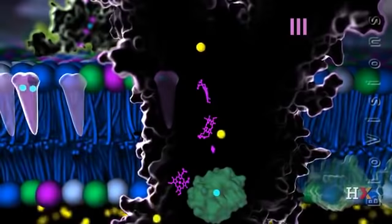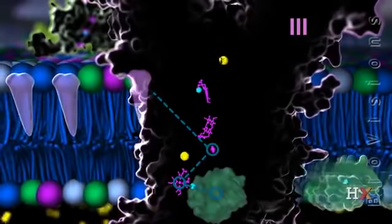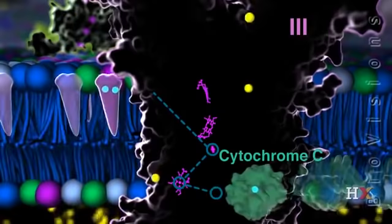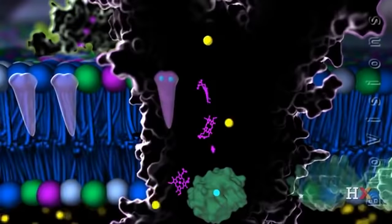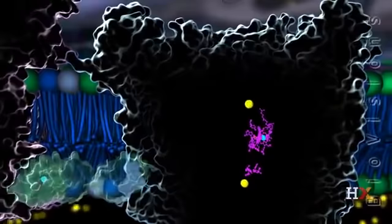Coenzyme Q molecules from complexes 1 and 2 donate their electrons to complex 3. One electron is recyclable and can re-enter complex 3 later, but the other passes through two redox centers before reaching cytochrome C. Cytochrome C carries the electron to complex 4.